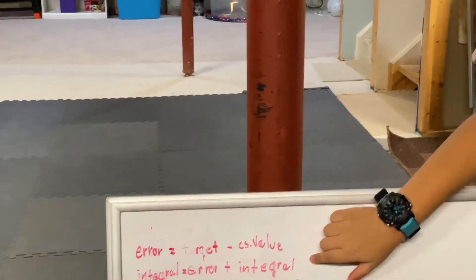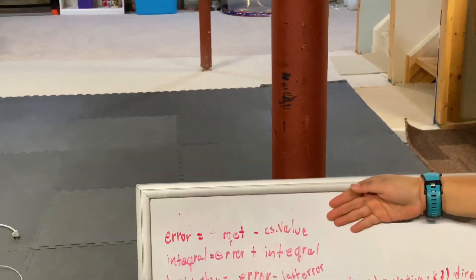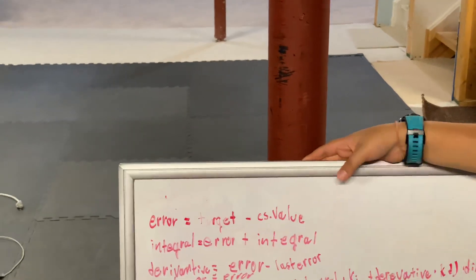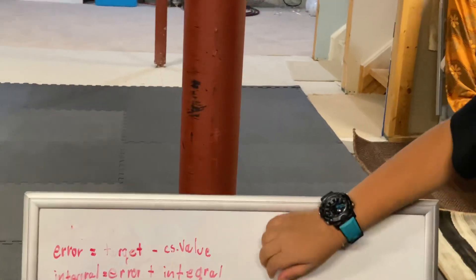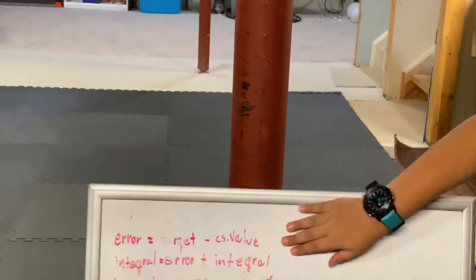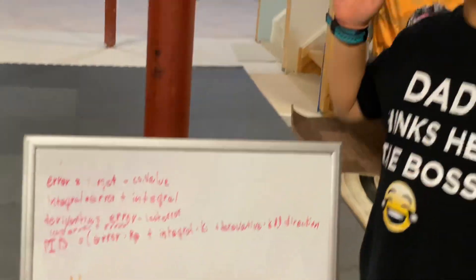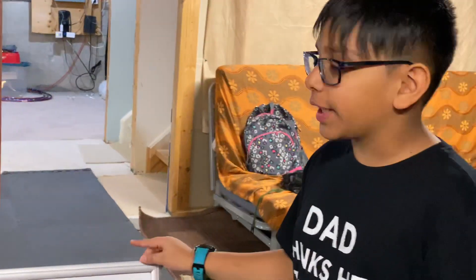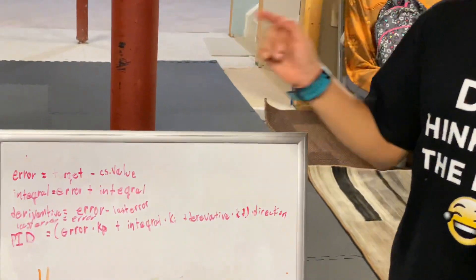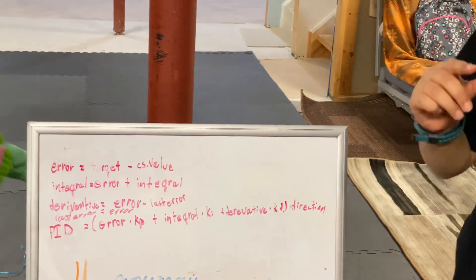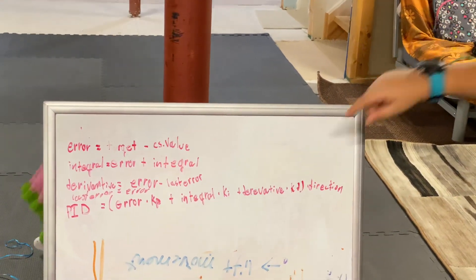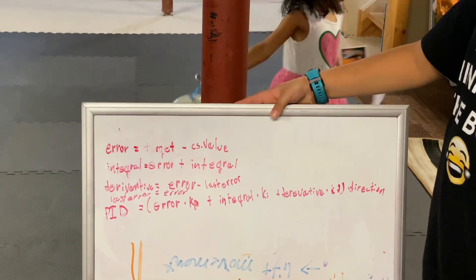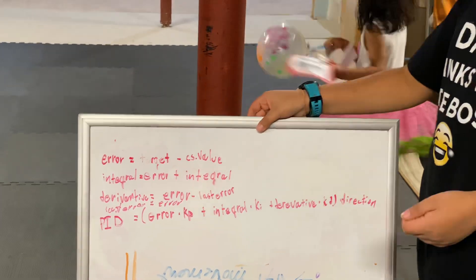In reality, the integral keeps accumulating if you're consistently going more positive or more negative. We don't use integral that much — we usually cancel it out by multiplying it by something very small, like 0.0001.